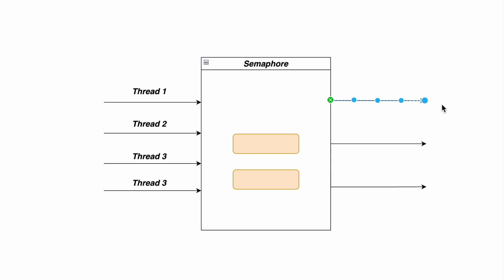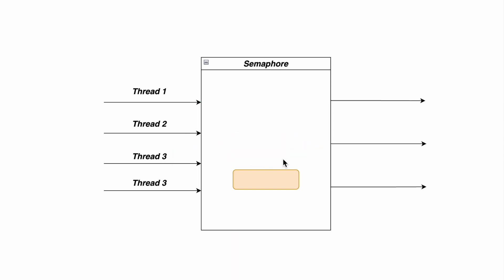Once thread one has been given the permit, the semaphore will have two available permits. While thread one is executing and accessing the service, threads two and three come to the semaphore asking for permits. At this moment the semaphore has two permits available, so it gives permits to thread two and thread three, and they also proceed with their execution. Thread one, thread two, and thread three are all executing after acquiring their permits.